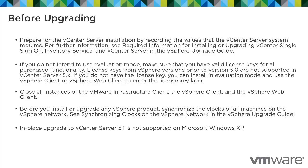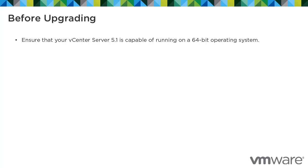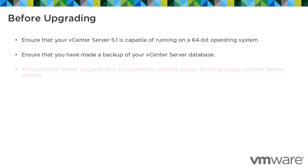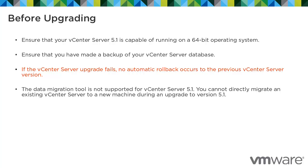In-place upgrade to vCenter Server 5.1 is not supported on Microsoft Windows XP. Ensure that your vCenter Server 5.1 is capable of running on a 64-bit operating system. Ensure that you have made a backup of your vCenter Server database. If the vCenter Server upgrade fails, no automatic rollback occurs to the previous vCenter Server version. The data migration tool is not supported for vCenter Server 5.1. You cannot directly migrate an existing vCenter Server to a new machine during an upgrade to version 5.1.